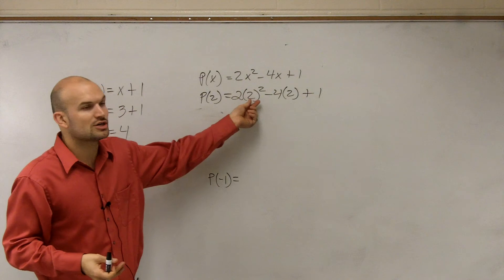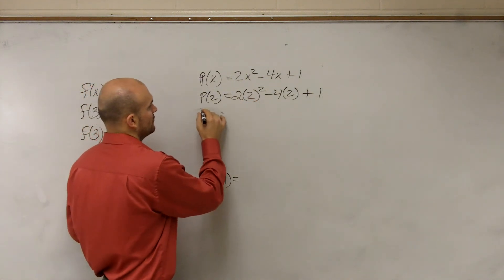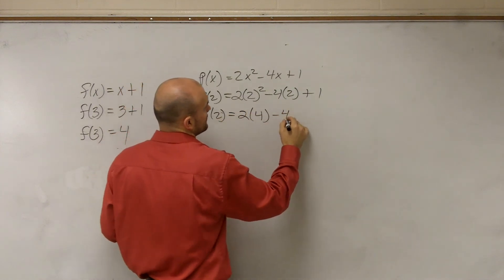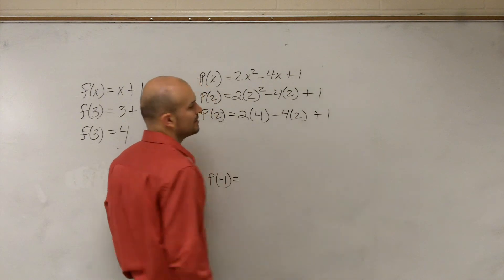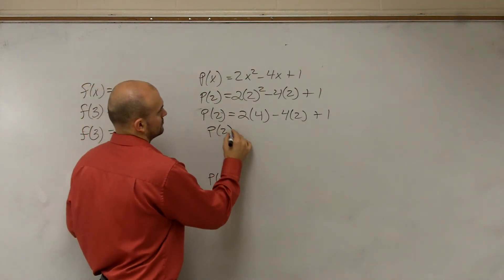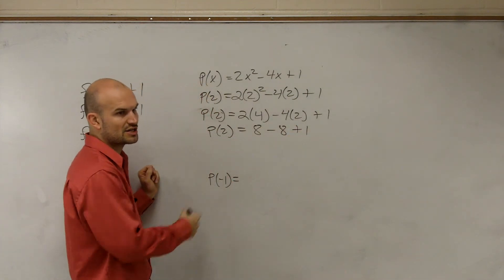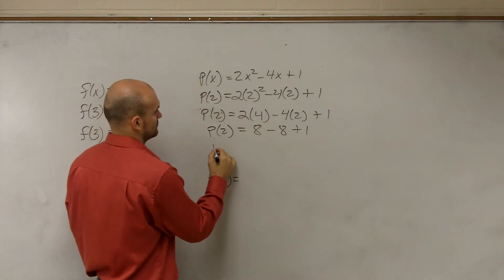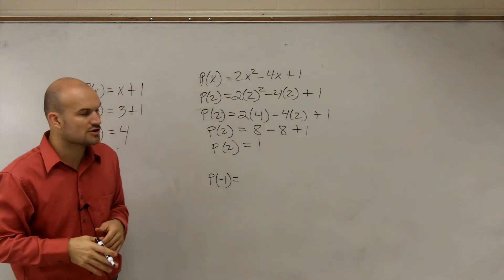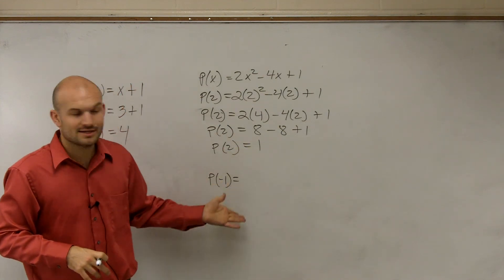We make sure we undo our squaring, or our exponents, or powers first, so therefore, we have P of 2 equals 2 times 4 minus 4 times 2 plus 1. Then we do multiplication and division. Then, addition and subtraction left to right. So therefore, the value of my function P at 2 is equal to 1.